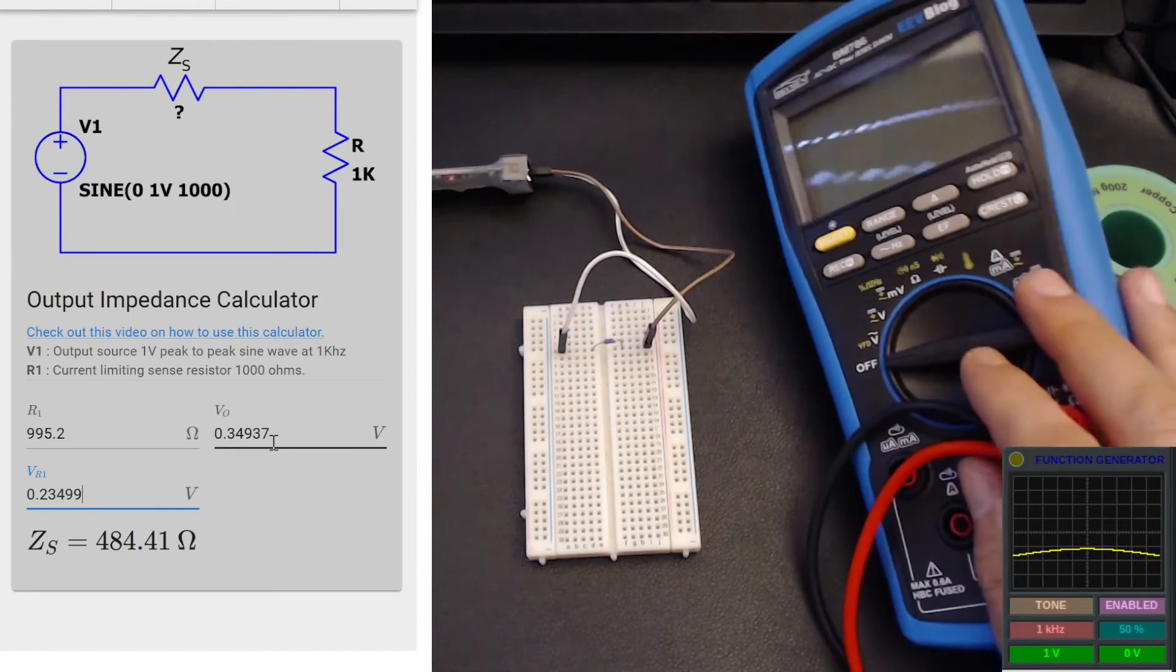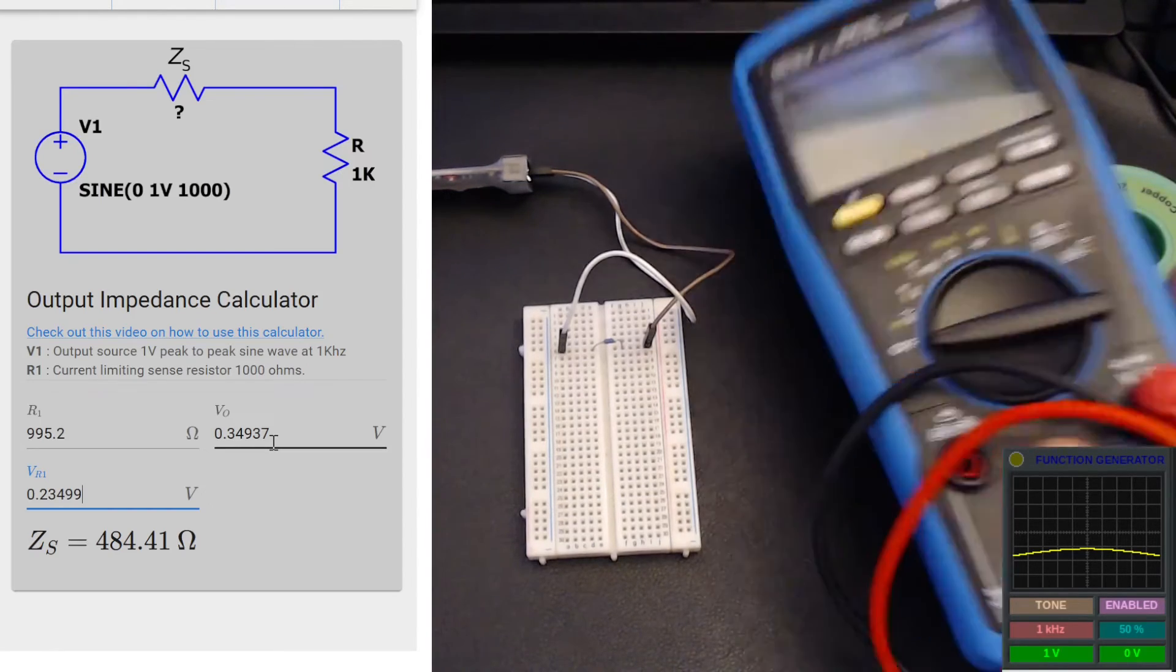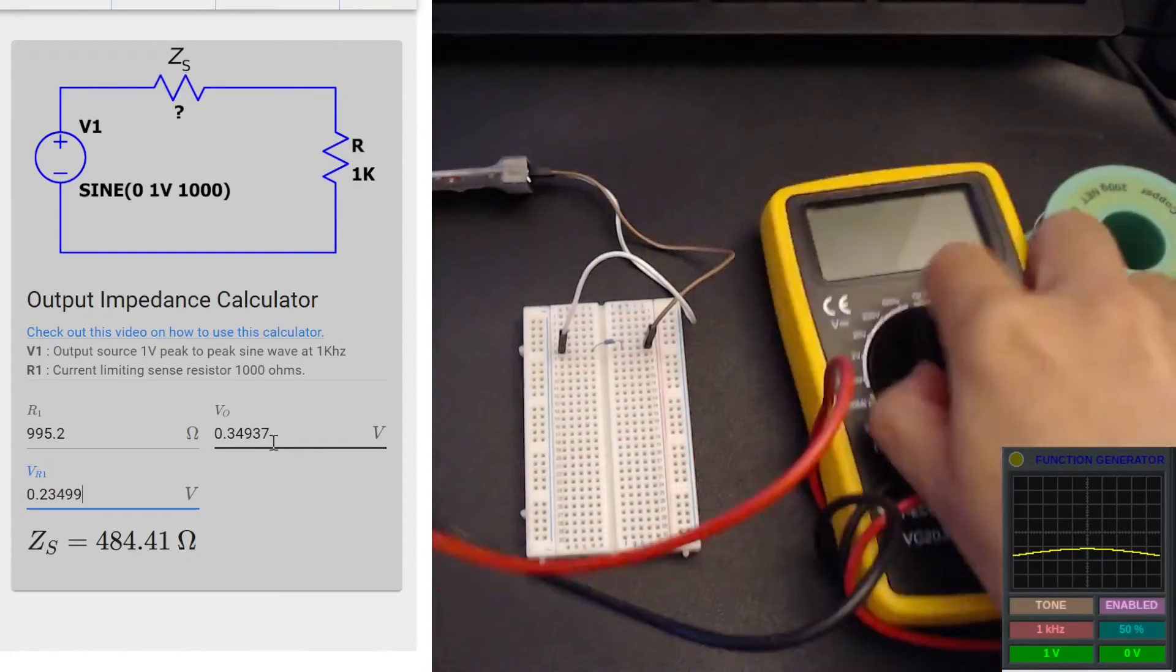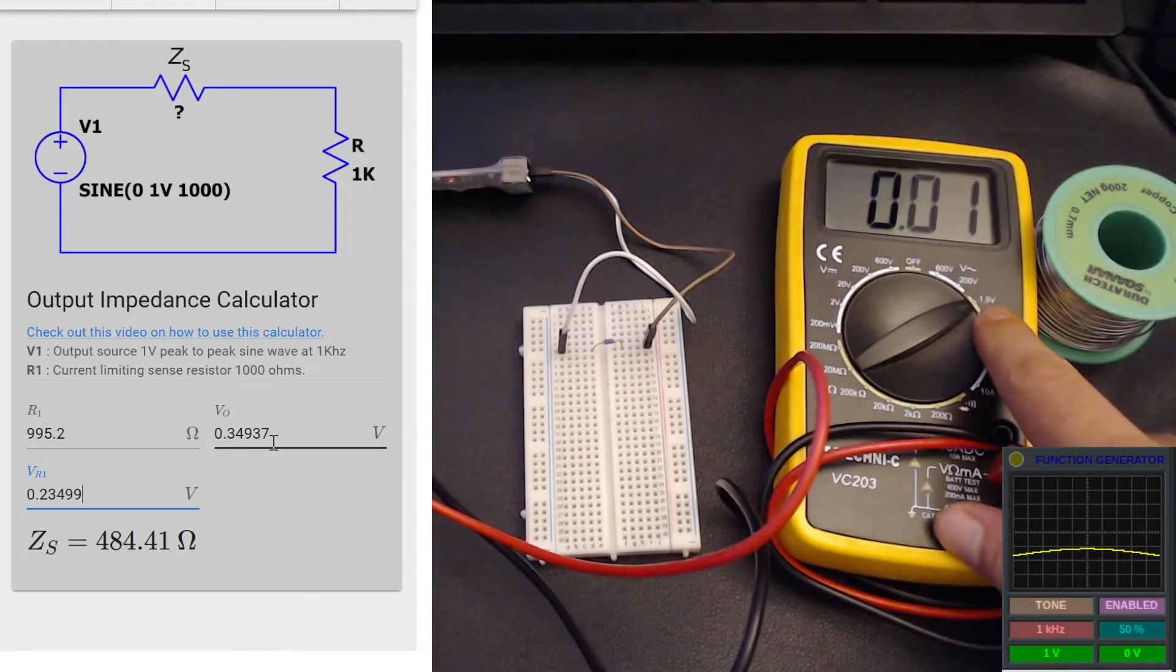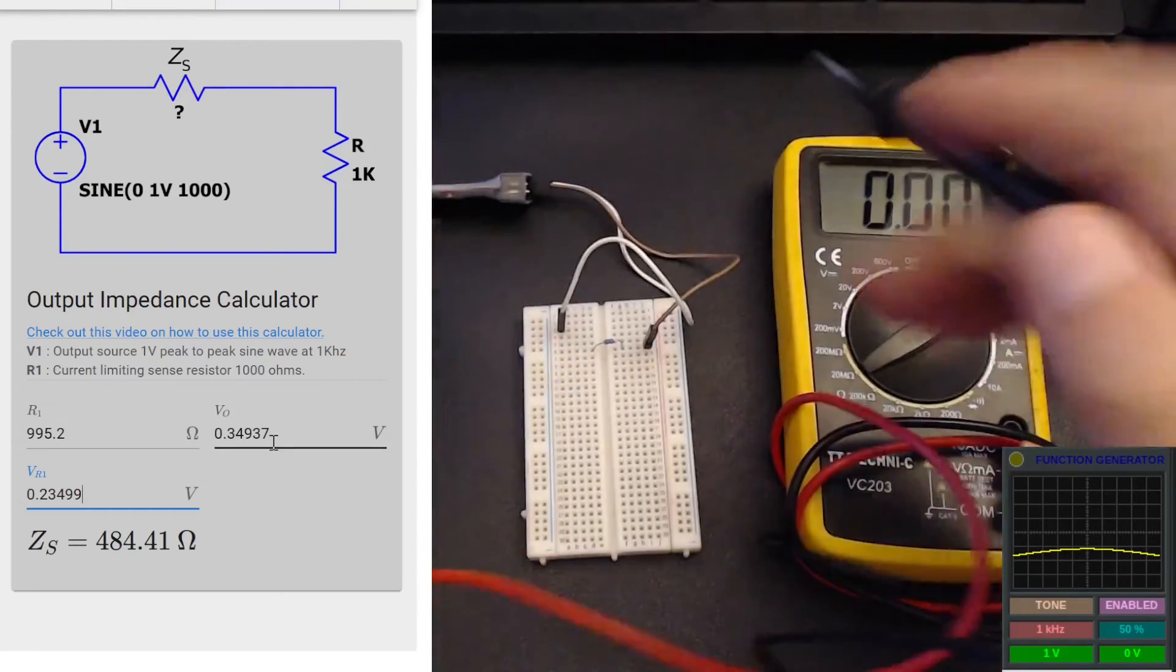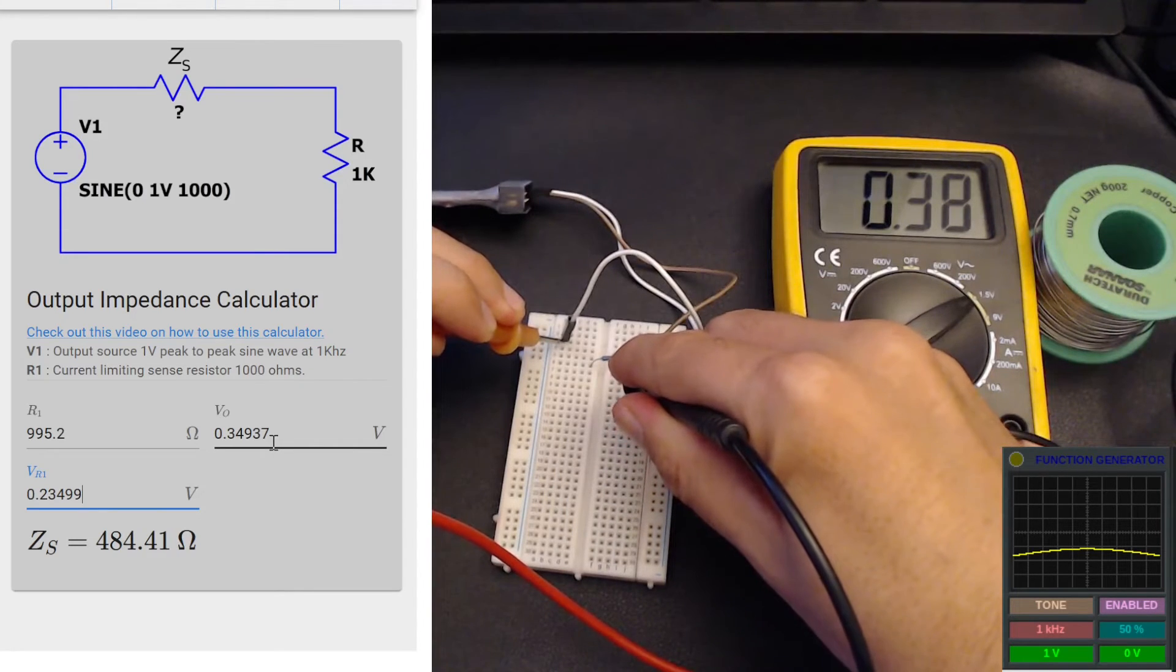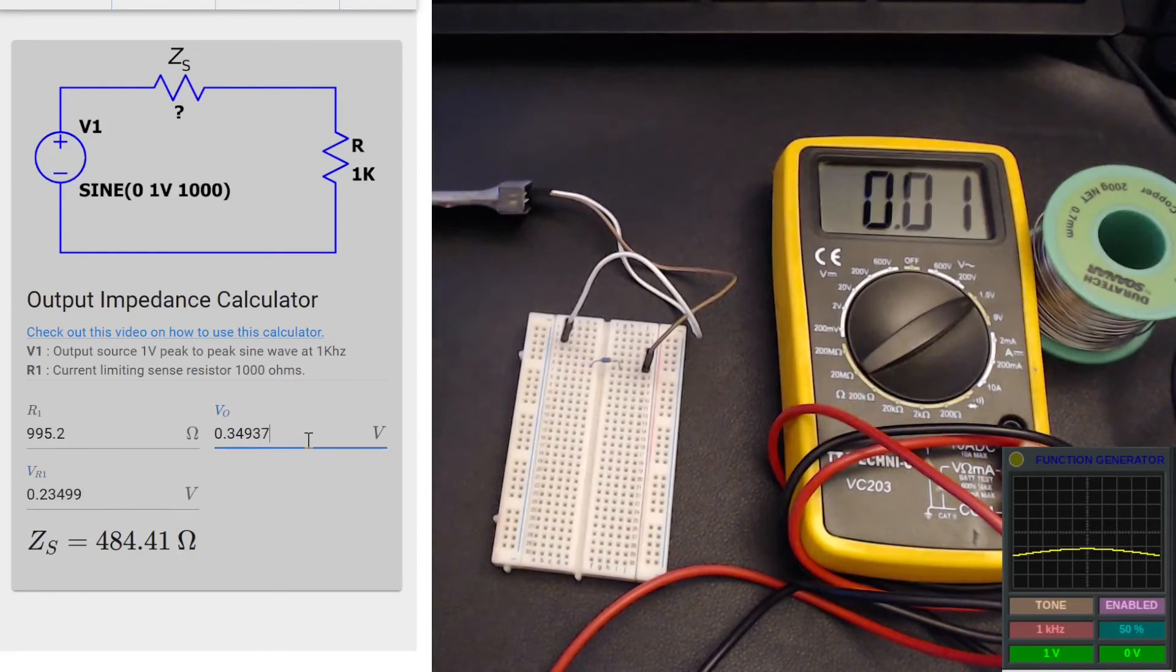The multimeter I used is a true RMS multimeter from Brymen. Now I want to repeat the same measurements with a cheaper multimeter that's not true RMS and let's see if we can arrive at similar results. I'll put it in AC 1.5 volts range. Again, I'll disconnect the resistor and measure the open circuit voltage of our output. We're looking at 0.38 volts, which is close enough to our previous reading.